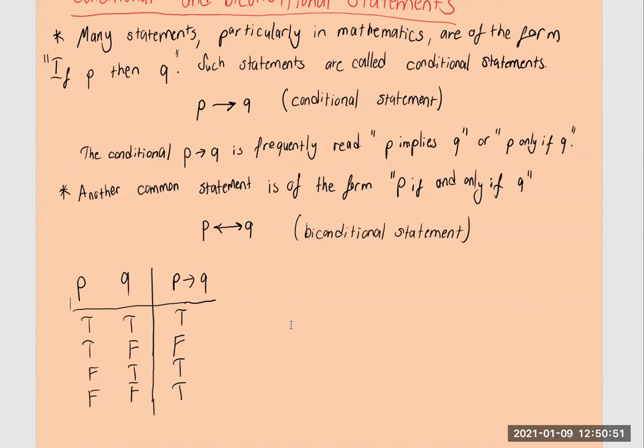There is p and q again as a biconditional statement. True, true, true, false, false, true, false, false. So for that one, if there is the same condition as true and true, at that time we have true for biconditional statement. Otherwise false.